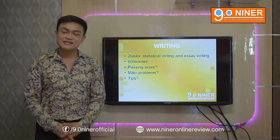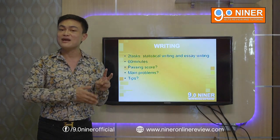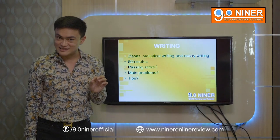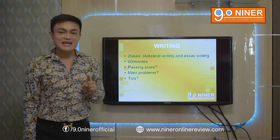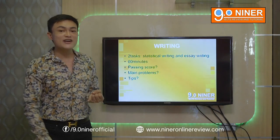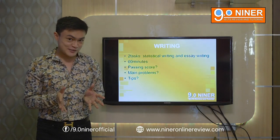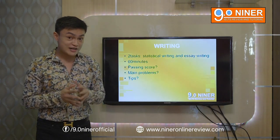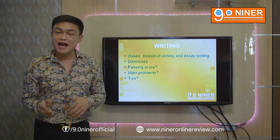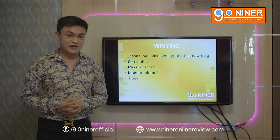Writing is the only subtest that is further subdivided into two parts. Task two is exactly the same for both academic and general training candidates. But writing task one differs: if you are taking the academic module, it involves statistical writing — you're given a line graph, bar graph, pie chart, or table diagram, and you're supposed to write at least 150 words. For general training candidates, writing task one is letter writing — either a formal or informal letter — with the same minimum requirement of at least 150 words.